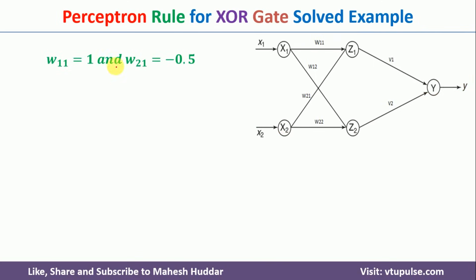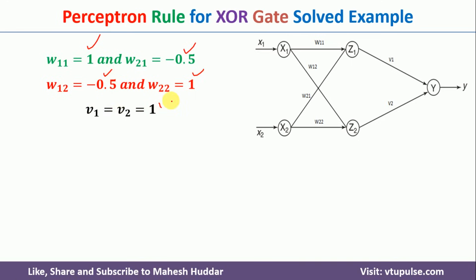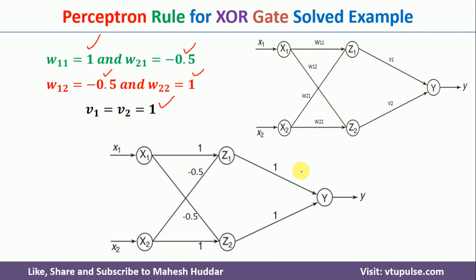Finally, the learned weights are: W11=1, W21=−0.5, W12=−0.5, W22=1, V1=1, and V2=1. Putting all these values into the network diagram gives the final perceptron implementation of the XOR gate. In this video, I have explained how to use the perceptron rule to design an XOR gate. If you like the video, please like and share with your friends, press the subscribe button for more videos, and press the bell icon for regular updates. Thank you for watching.